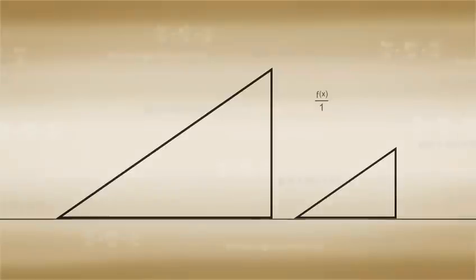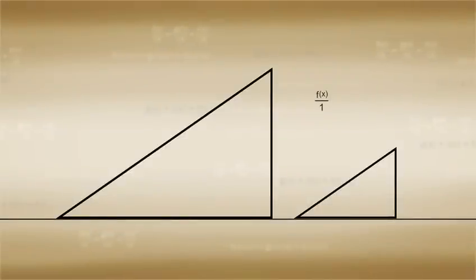The relationship f over 1 equal to g over r can be represented geometrically with two similar triangles. One side of the resulting triangle has to be equal to one unit.